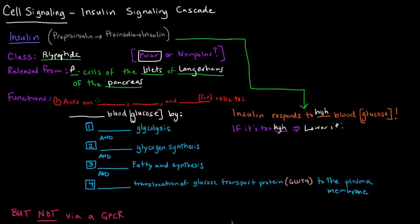So it acts on liver, muscle, and adipose, which is of course just fat cells, to decrease blood glucose levels. So how does it do that? Variety of ways. Glycolysis. So anything that decreases blood glucose levels is something that insulin will activate.